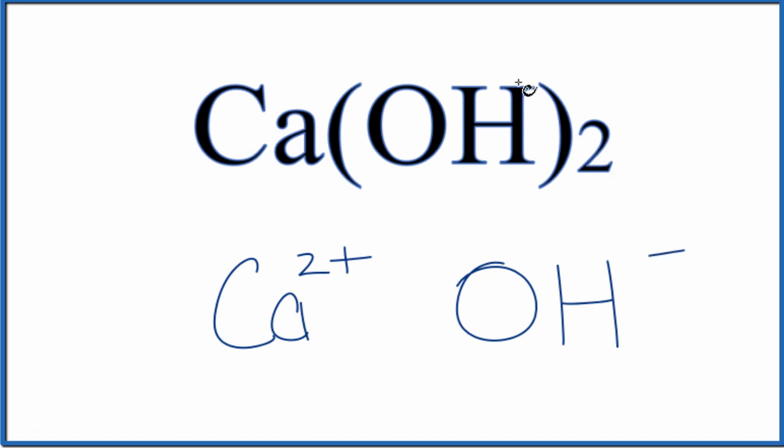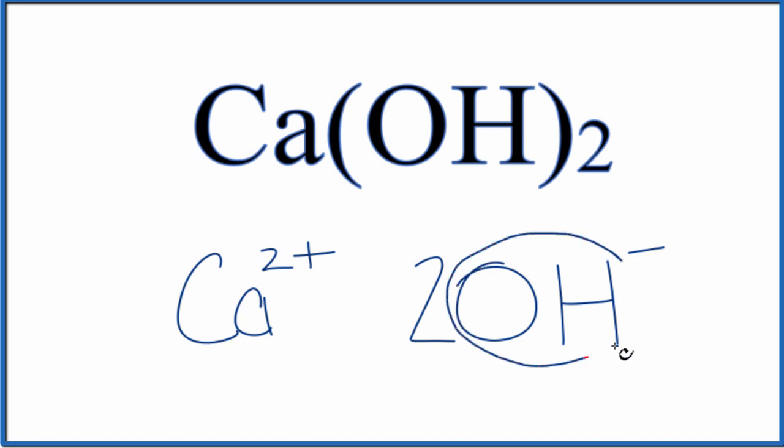Since we have two of these, the two applies to the whole thing in parentheses here. We're going to put a coefficient of two in front of the hydroxide ion. So when we're looking at the number of ions in calcium hydroxide, we have one calcium ion, Ca²⁺, and two hydroxide ions with a one minus ionic charge. That one minus applies to the whole OH here.